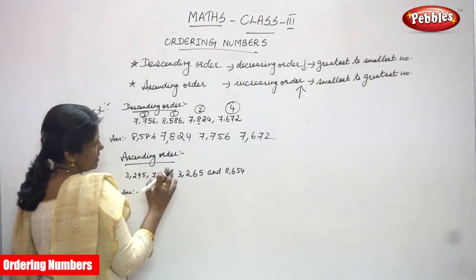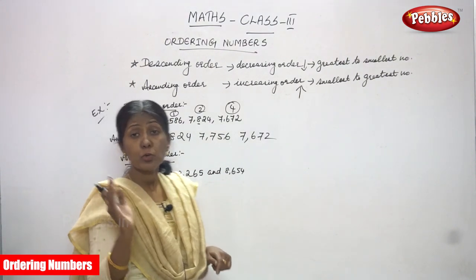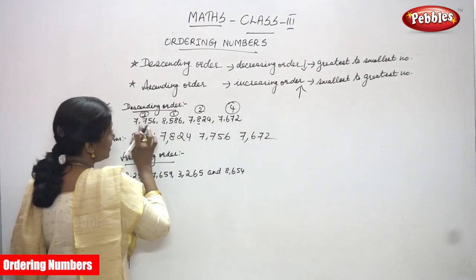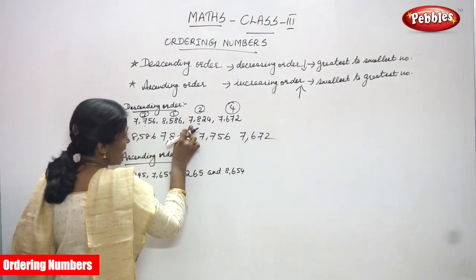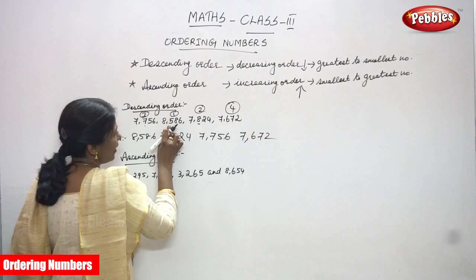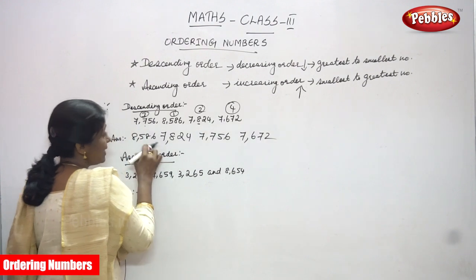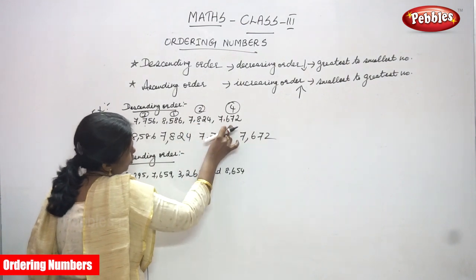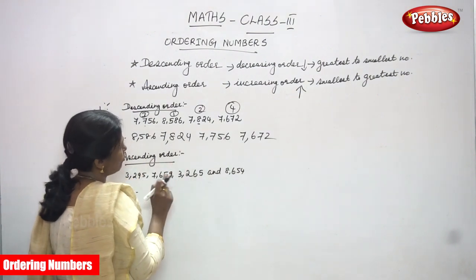Let me repeat once again. All four numbers are four-digit numbers, so we first concentrate on the thousands place. The thousands digits are: 7000, 8000, 7000, and 7000. Eight thousand five hundred and eighty-six is the greatest number, so it gets first priority and is written first in the answer.